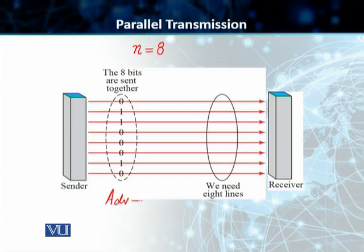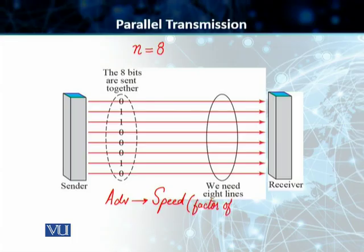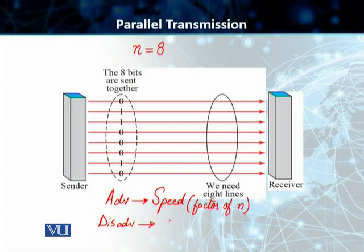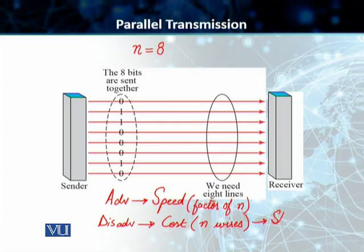Some advantages of this parallel transmission mode: the basic one is speed. If there are no other factors impacting transmission, then parallel transmission can increase the transfer speed by a factor of n, where n is the number of bits being sent at the same time. The disadvantage, as you would have guessed, is cost — because we need n wires running from sender to receiver. Although we achieve higher transmission speed, parallel transmission is relatively more expensive, and therefore we normally limit its applications to short distances only.